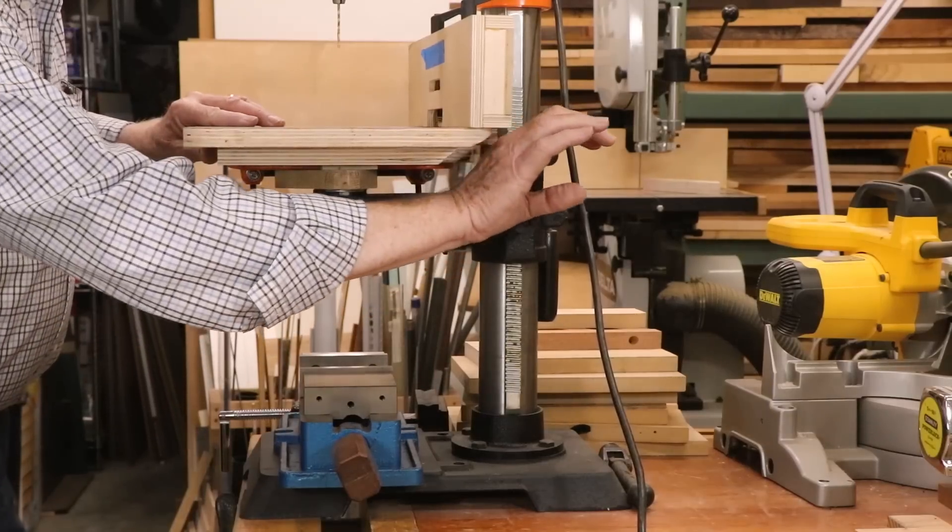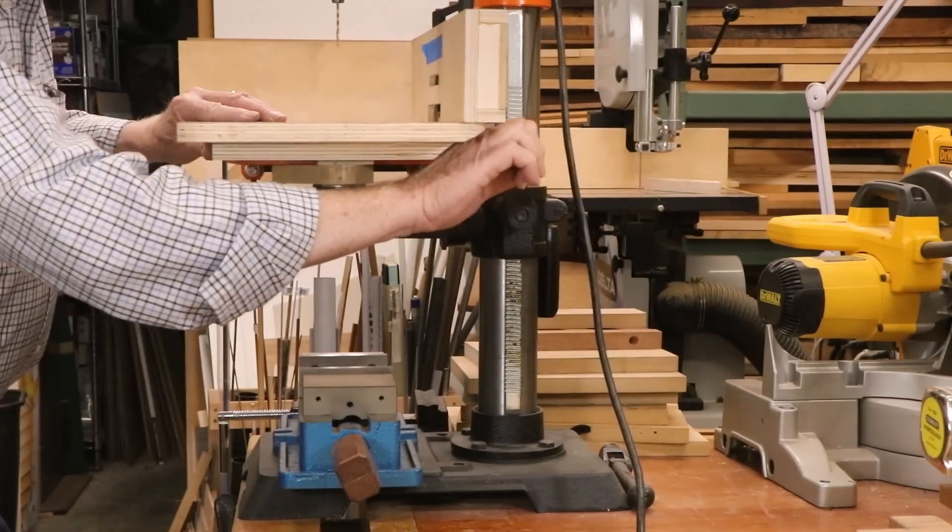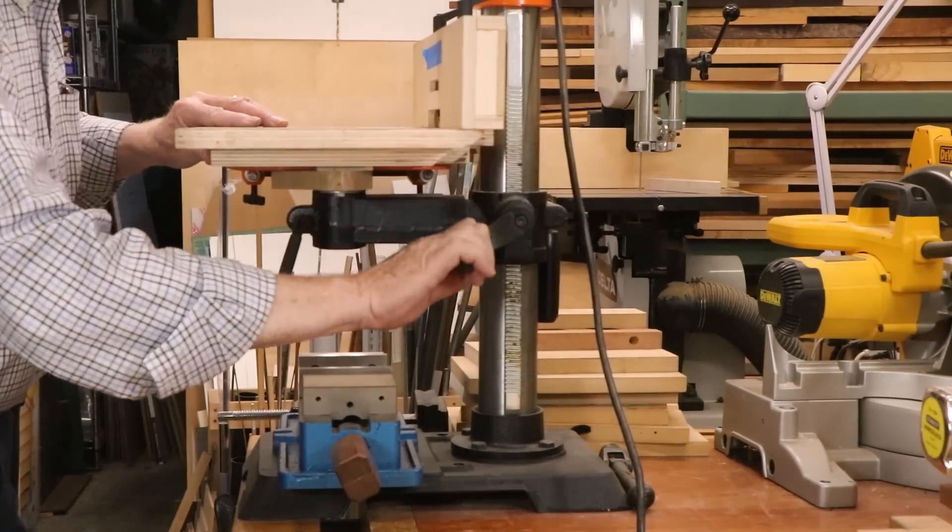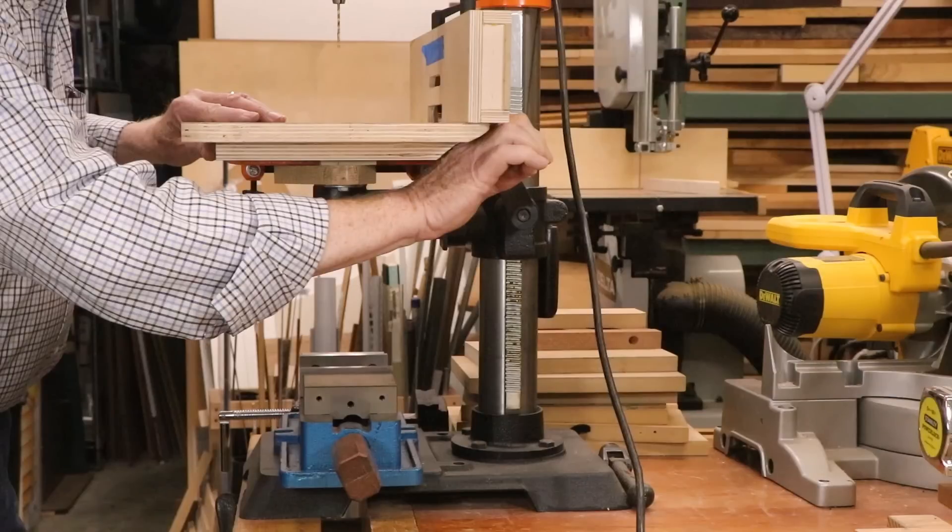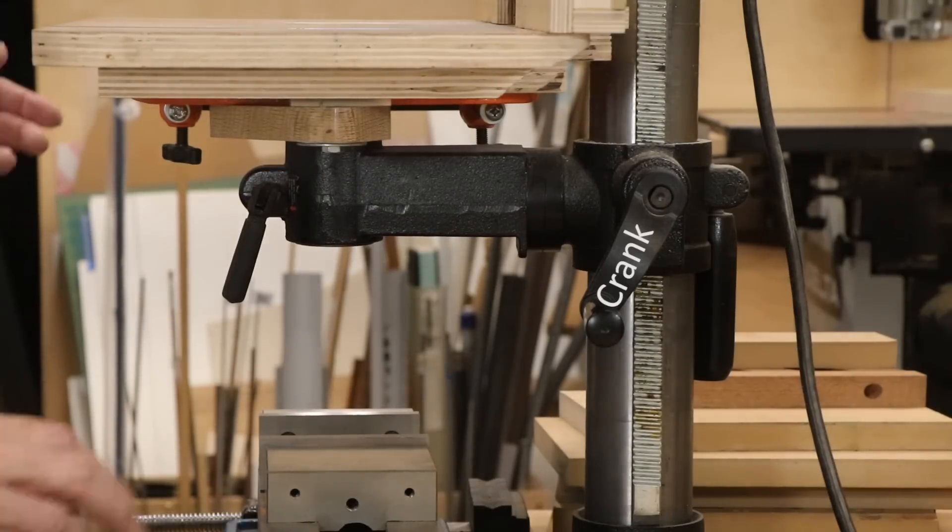However, larger tables interfere with the operation of the rack and pinion mechanism for adjusting the height of the table. Even with this small auxiliary table I first built, I had to cut away quite a bit just to allow the crank handle to revolve. A new bigger table would only worsen the problem.